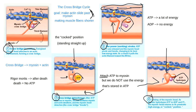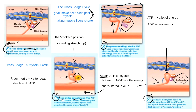ATP is involved in step three — crossbridge detachment. Without ATP, I can't do step three, which means I get stuck at the end of stage two. After the power stroke is done, myosin is bent over and stuck attached to actin.